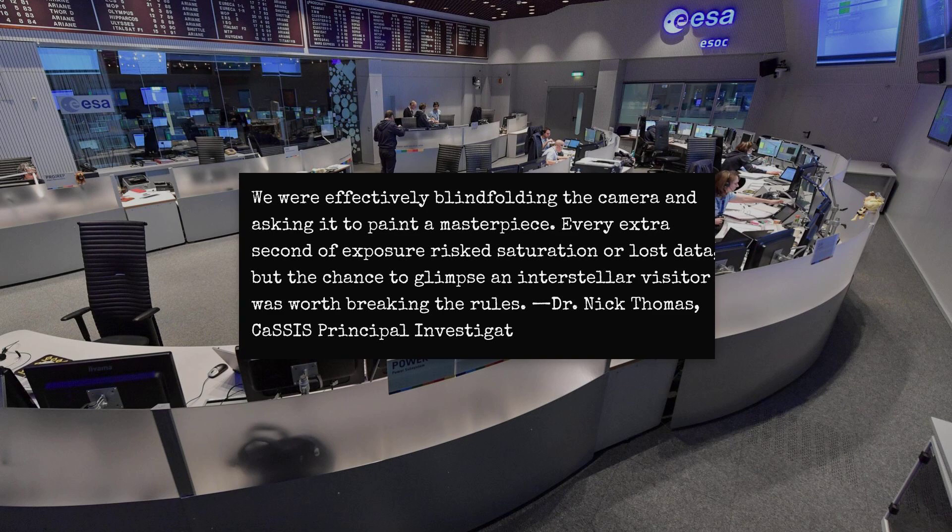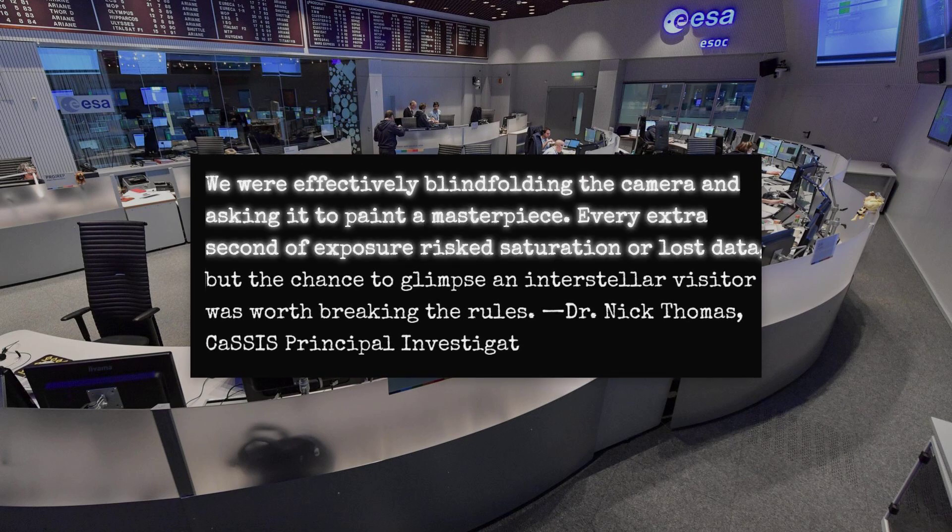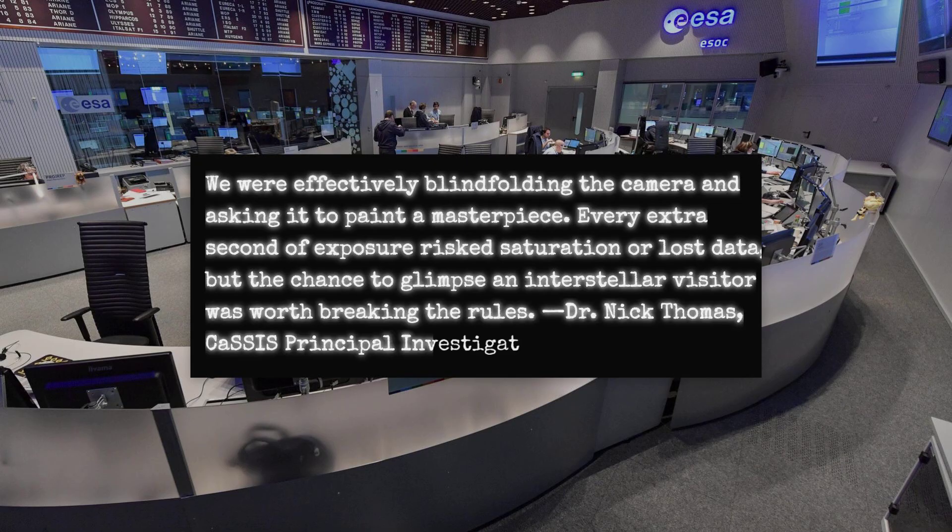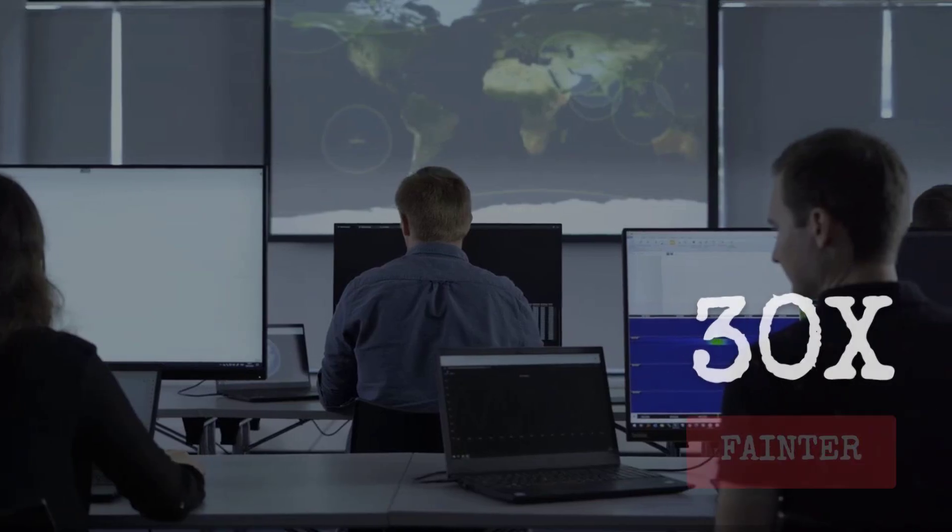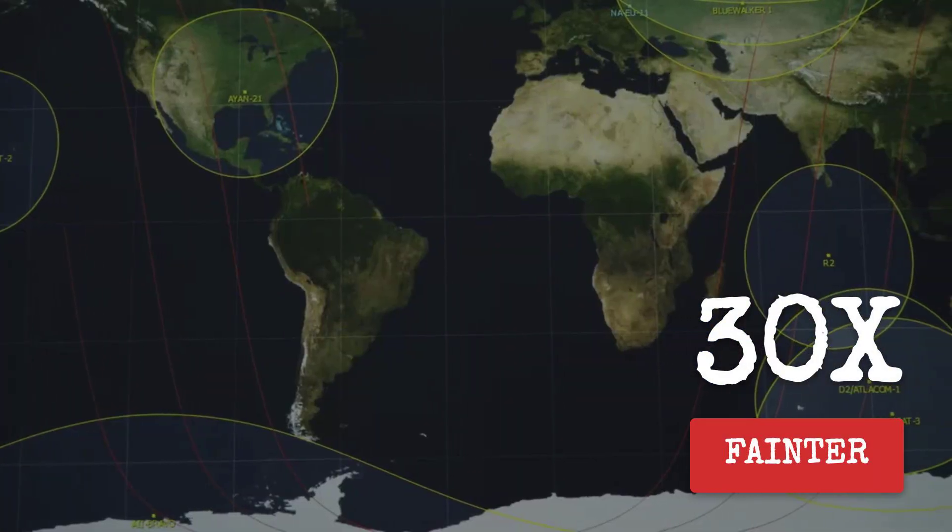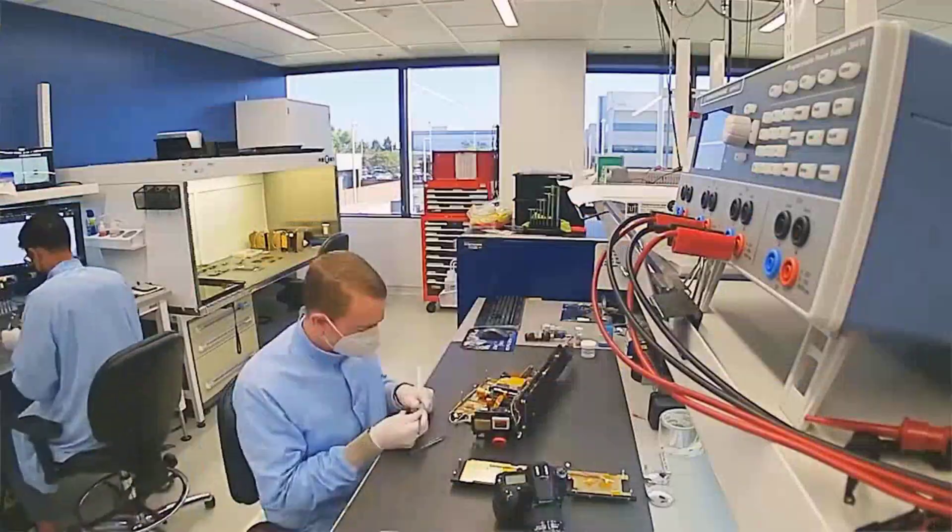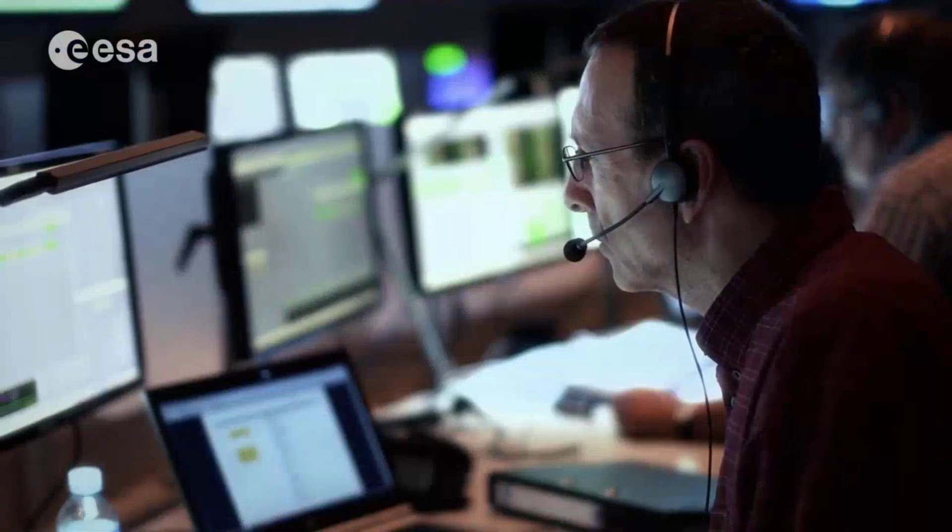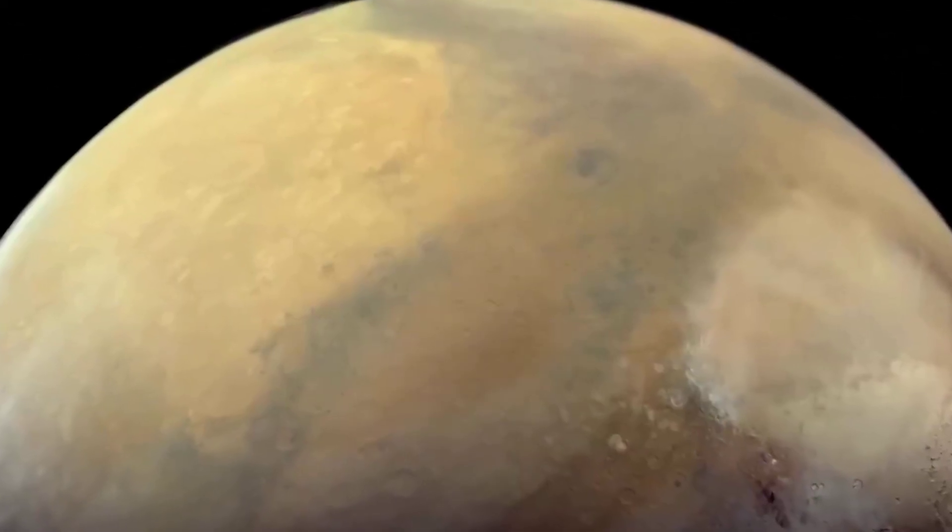Principal investigator Nick Thomas described the challenge in plain terms: "This was a very challenging observation for the instrument. The comet is around 10,000 to 100,000 times fainter than our usual target." The technical team adapted both hardware and software on the fly, recalibrating the camera's settings and repurposing mission routines to chase a target never meant for CAS-IS's lens.